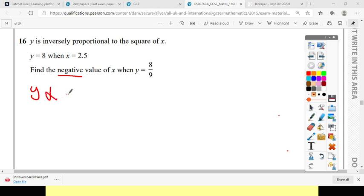I know Y is inversely proportional to the square of X, so Y equals K over X squared. All we need to do now is find out what K is.